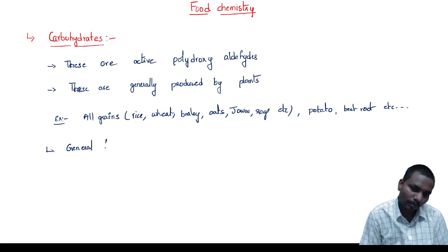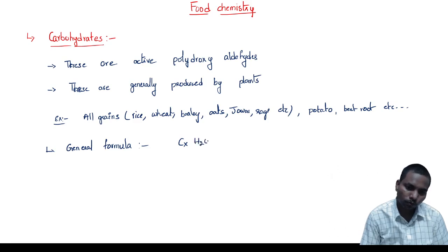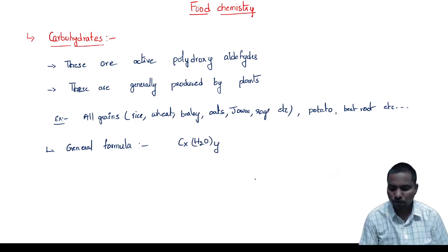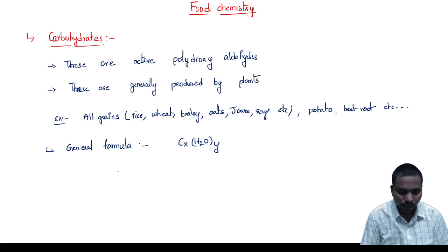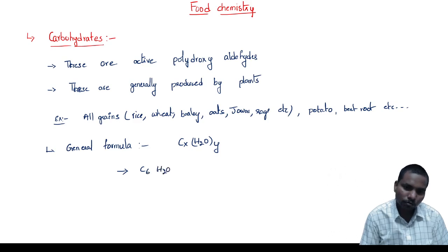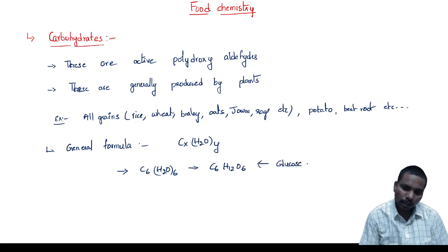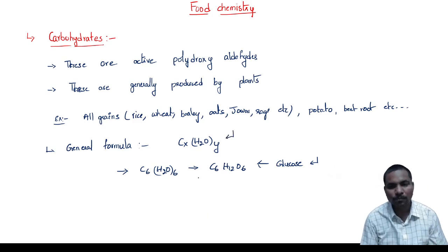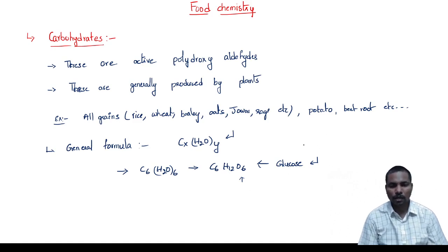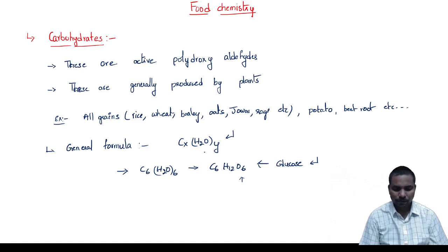The general formula of carbohydrates is Cx(H2O)y. For example, if X is 6 and Y is also 6, then the formula will be C6(H2O)6, which means C6H12O6 — that is the formula of glucose. Based upon the X and Y values, the carbohydrate changes — glucose, fructose, maltose, and so on.